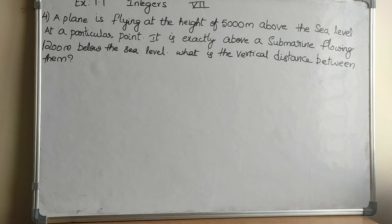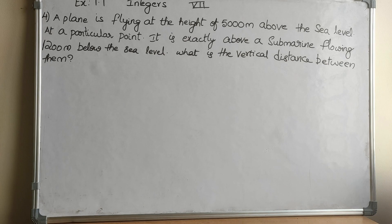A plane is flying at a height of 5000 meters above sea level. At a particular point, it is exactly above a submarine traveling 1200 meters below sea level. What is the vertical distance between them?